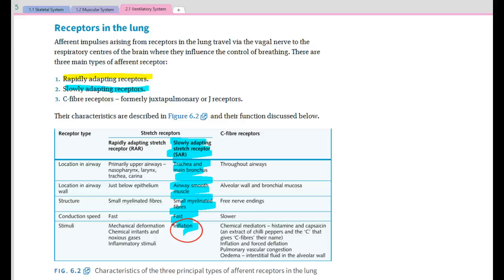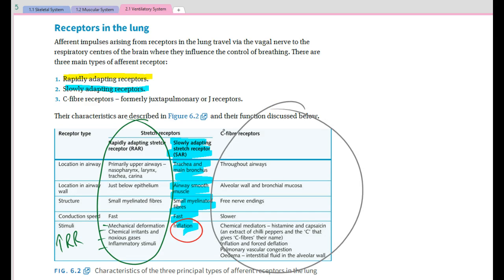Our rapidly adapting stretch receptors - what we're looking at here is mechanical deformation, chemical irritants, noxious gases or inflammatory stimuli. If they're present, then we will increase respiration rate. Our C-fibres receptors is basically looking at histamines, which may decrease the ability to breathe. You think that with hay fever, we would take an antihistamine, helping us to breathe more freely.